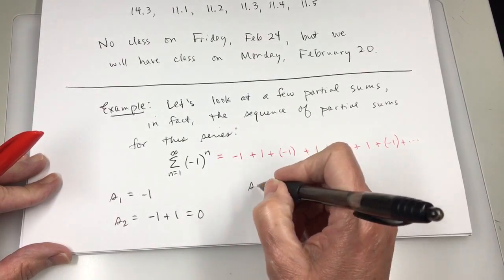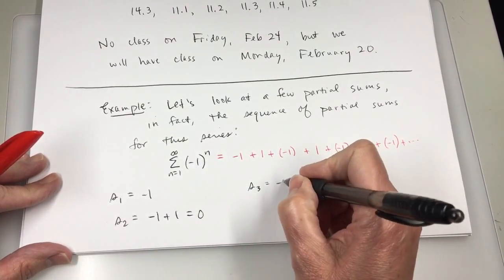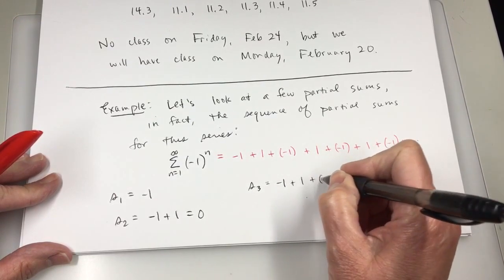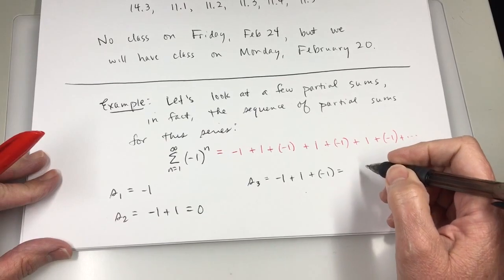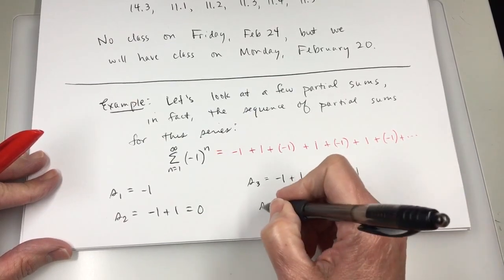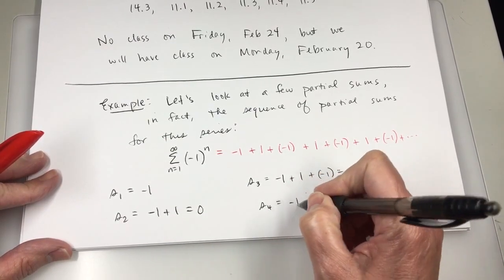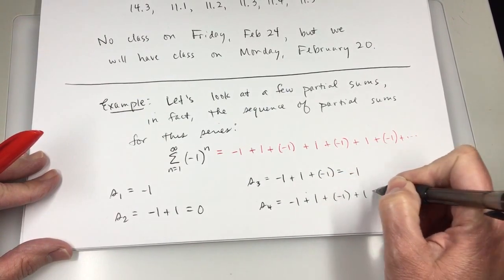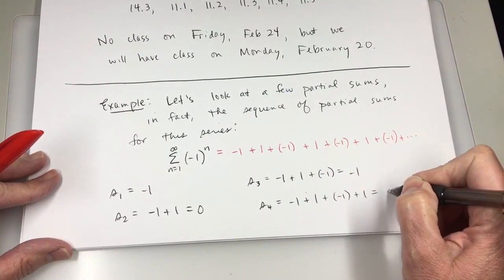S sub 3 is the sum of the first three terms, negative 1 plus 1 plus negative 1, and that's going to be negative 1. And S sub 4 is negative 1 plus 1 plus negative 1 plus 1, and that is 0.